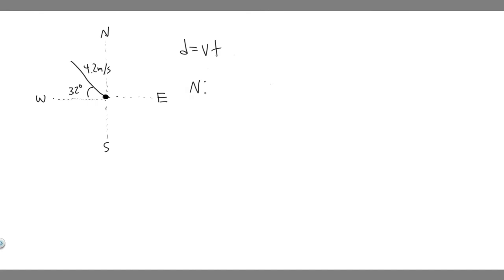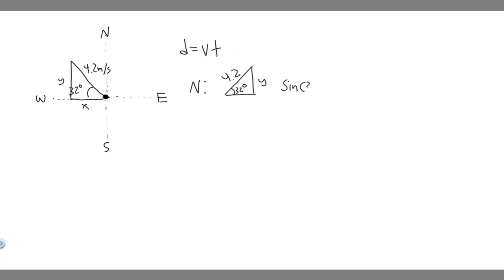For the north direction, we need the y-component of the velocity. If we redraw the triangle with 32 degrees at the base and the hypotenuse equal to 4.2 meters per second, we want to find y — the vertical side. Using SOH-CAH-TOA, sine of 32 equals opposite over hypotenuse, so sine(32) = y / 4.2. Multiplying both sides by 4.2 gives y = 4.2 × sin(32°), which is the velocity in the y-direction.